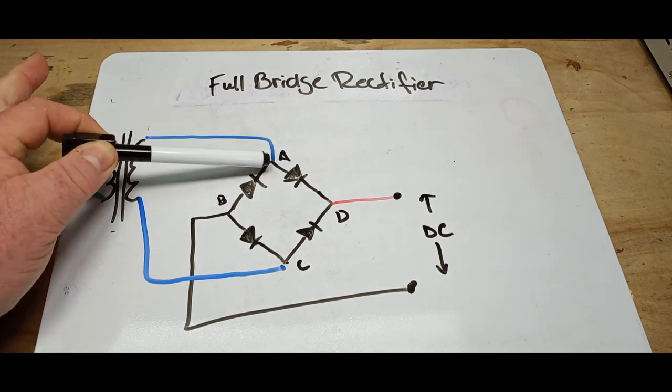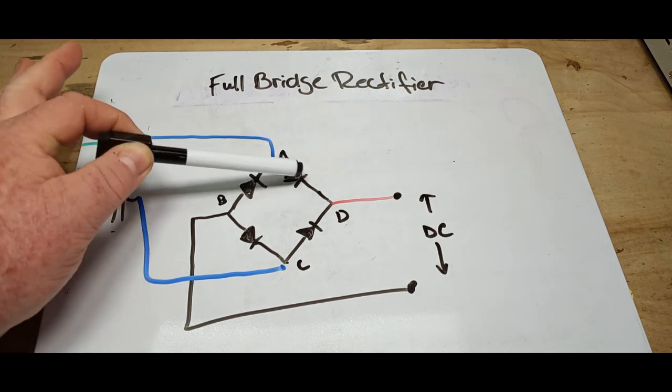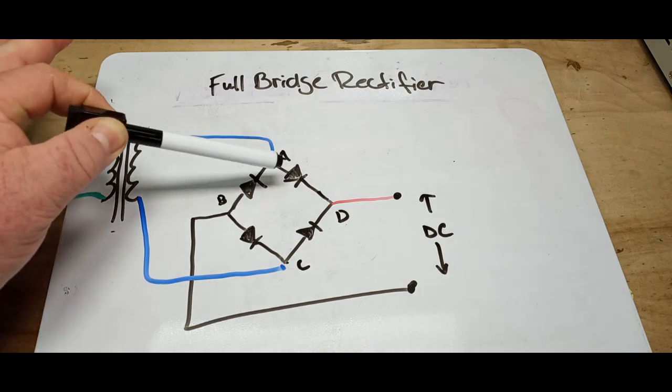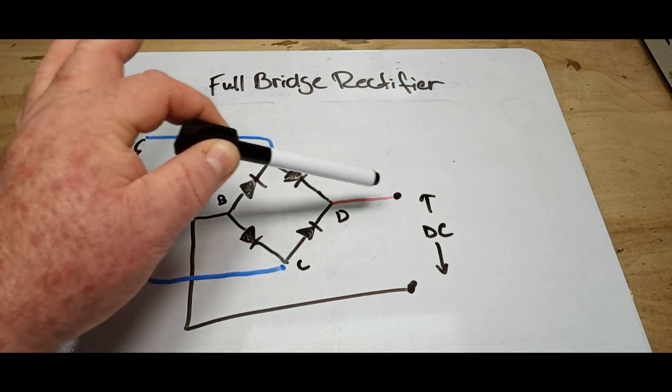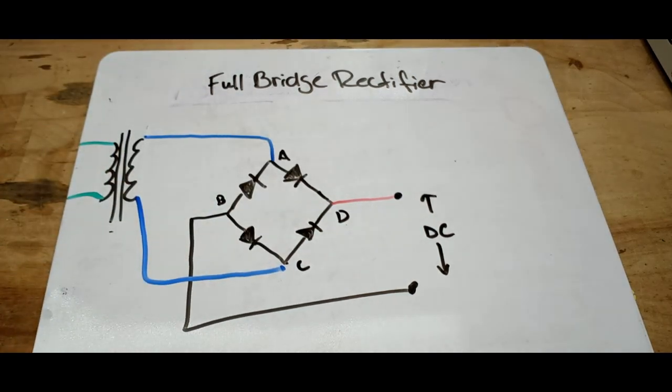the AC comes in here and it's forced in this direction through this diode because it can't go this way to that way. If this is the more positive, then it's going to come up through here and here. And that's basically what we're doing.